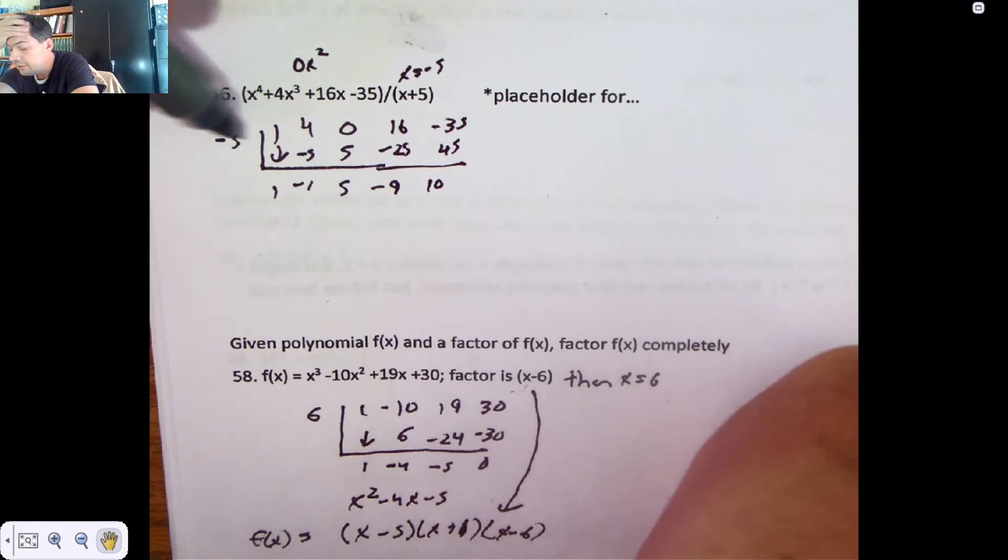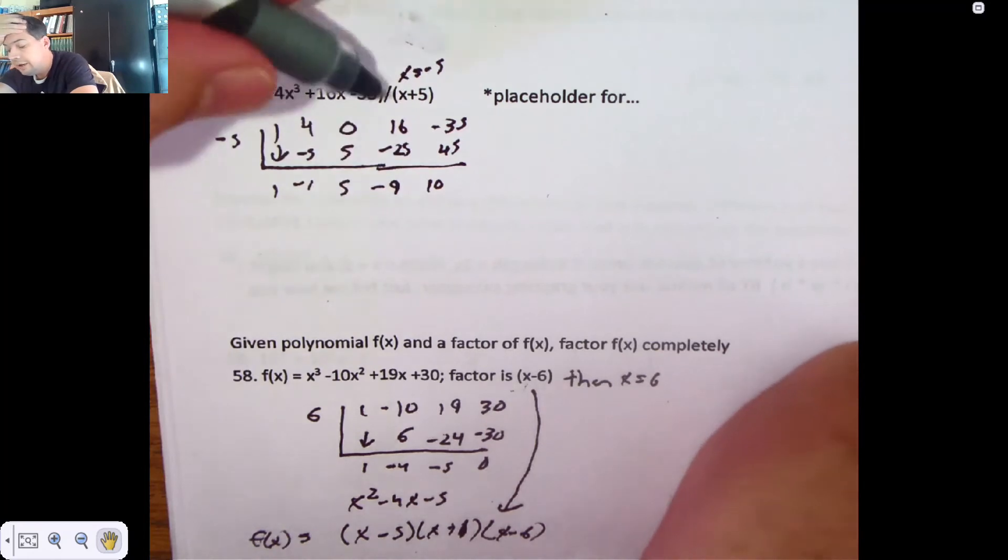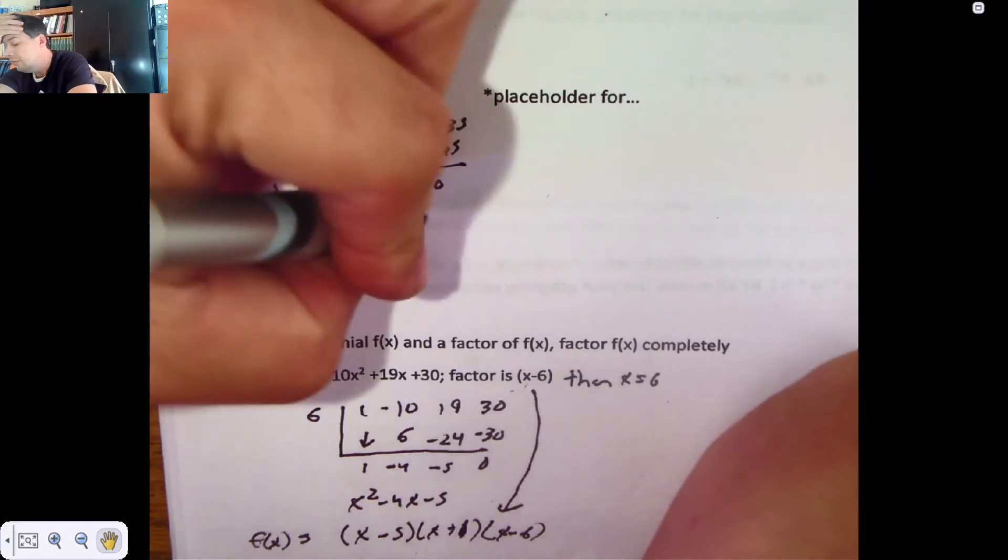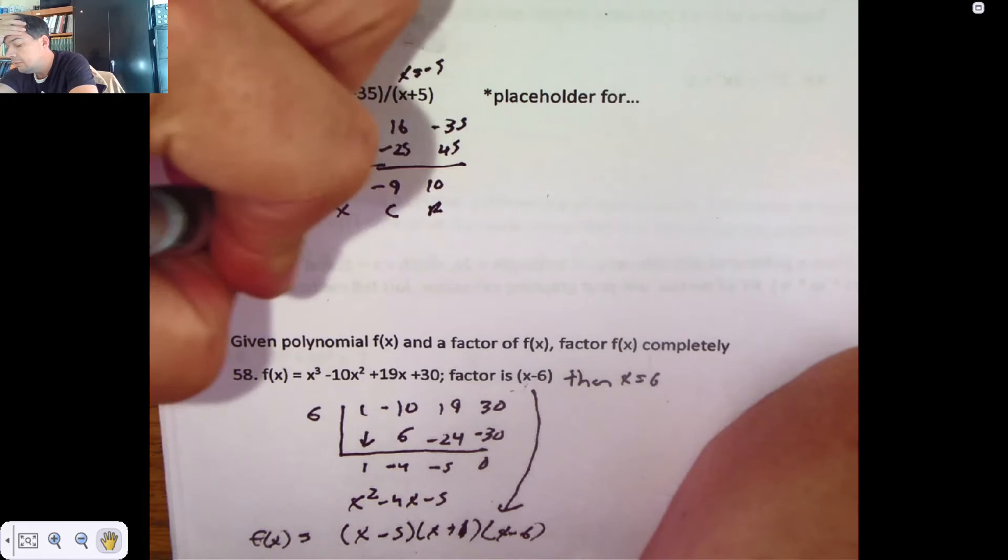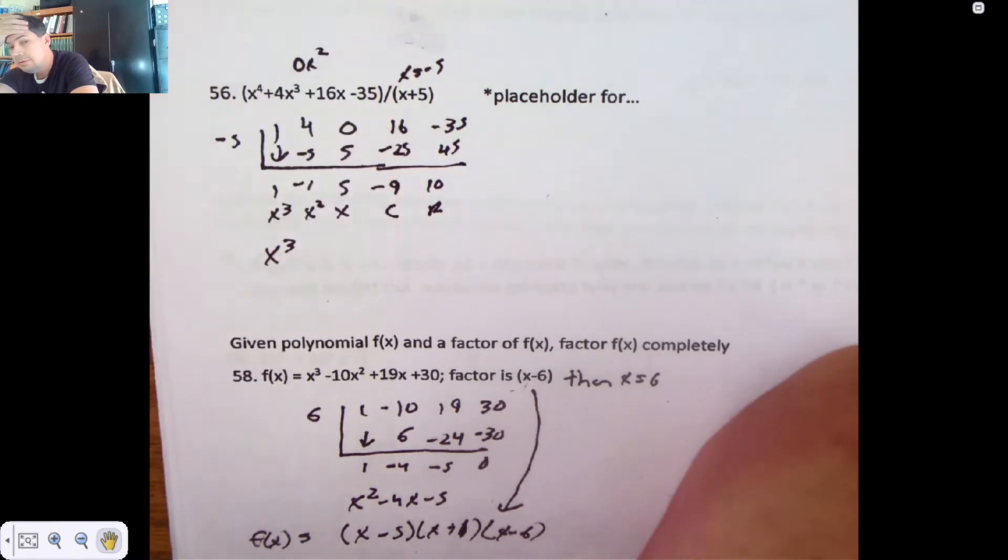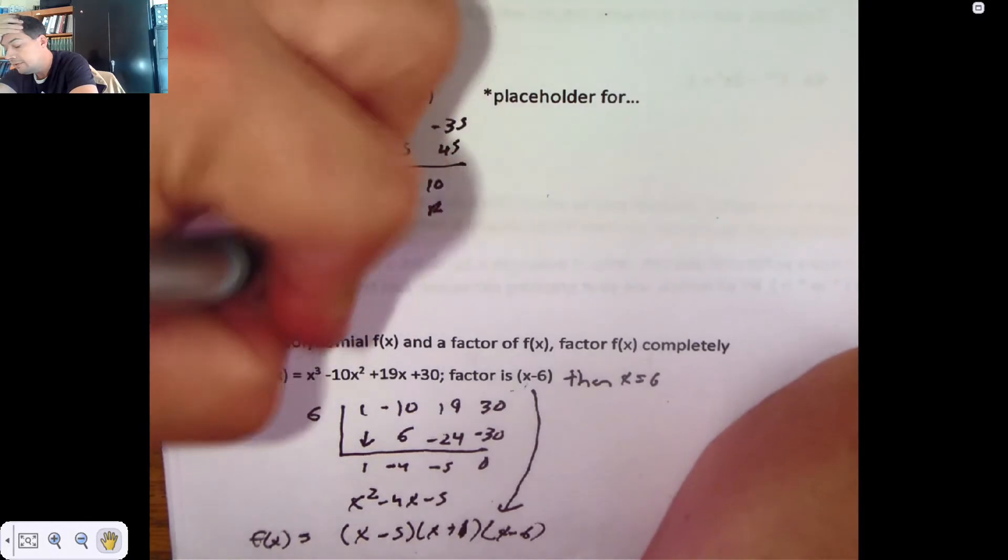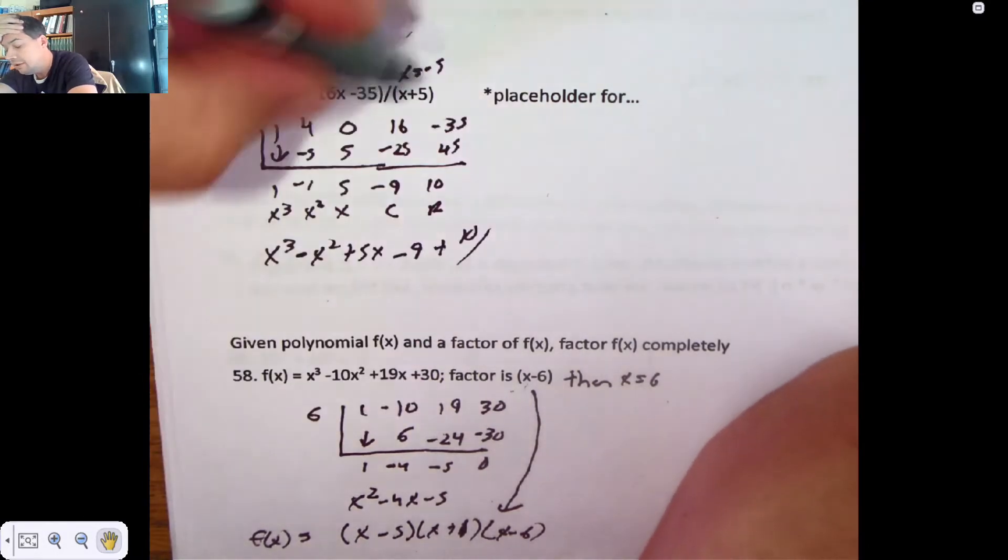I'm going to scan through and make sure I did not make any mistakes. It doesn't look like I did. So if we divide x to the fourth plus 4x cubed plus 16x minus 35 by x plus 5, we're left with x cubed, take away x squared, plus 5x, take away 9, plus 10 pieces of x plus 5.